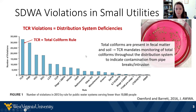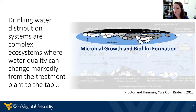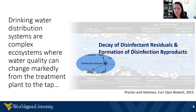The key takeaway from this presentation is that drinking water distribution systems are actually really complex ecosystems where lots of different biological and chemical changes are happening. Water quality can change quite markedly as water travels from the treatment plant to the tap. Microorganisms can grow in this environment and form biofilms on the inside of drinking water pipes. We have disinfectants that we intentionally dose into drinking water to help control this problem, but as water moves further from the treatment plant, those disinfectants decay and even react with organic matter to form disinfection byproducts.